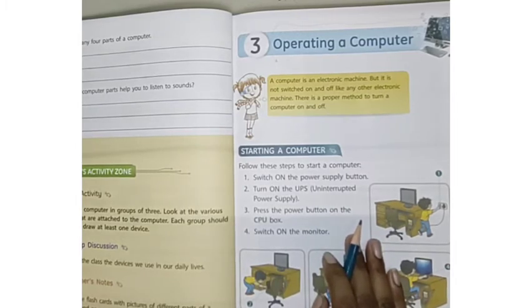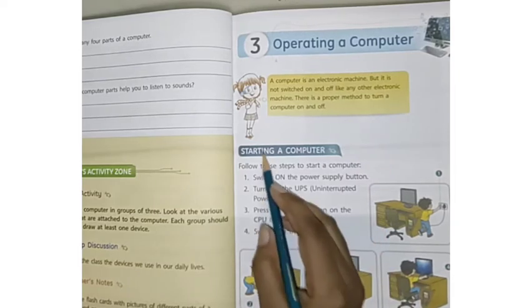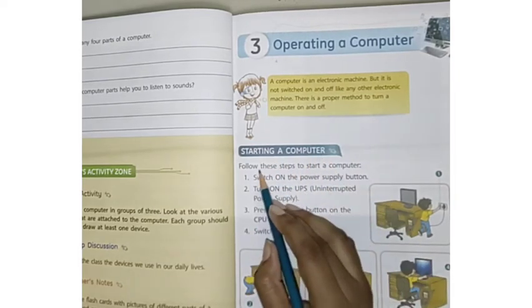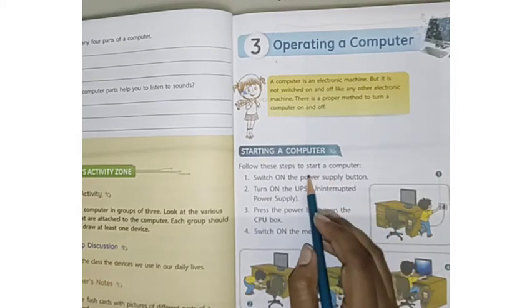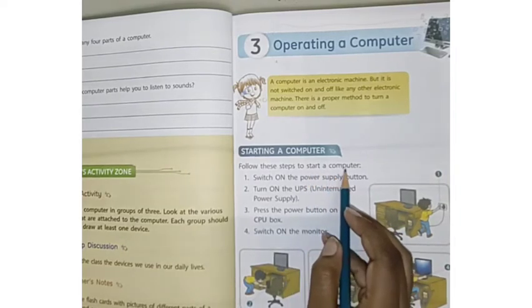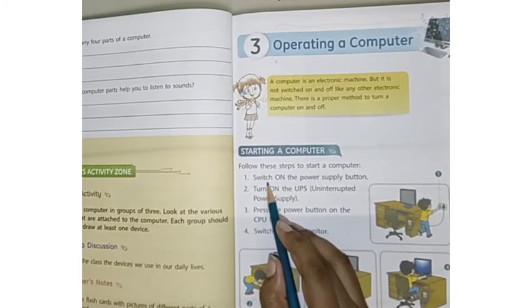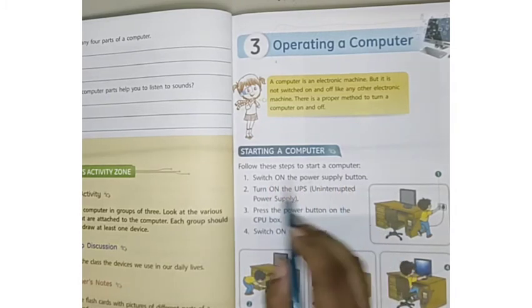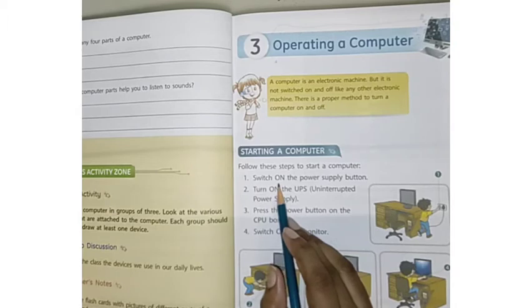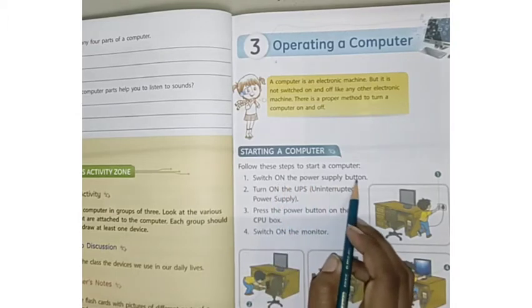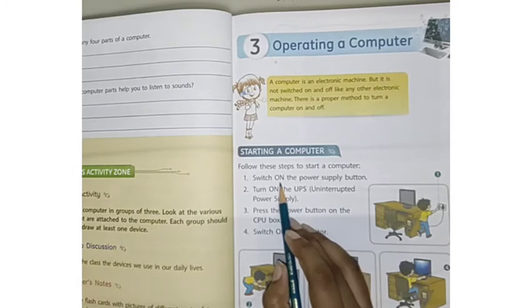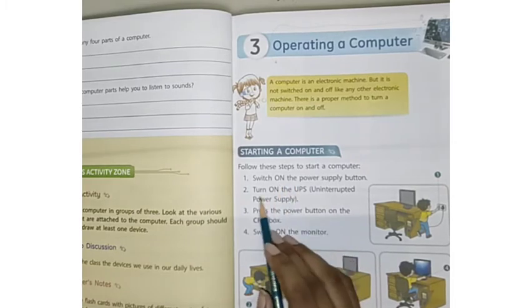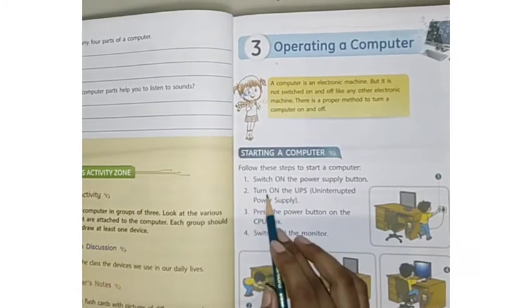How to start a computer: We will follow these steps. First, switch on the power supply button. The first step is the power supply button, which is our main switch. This will be turned on. Second step: turn on the UPS, the Uninterrupted Power Supply.